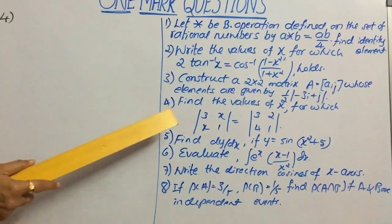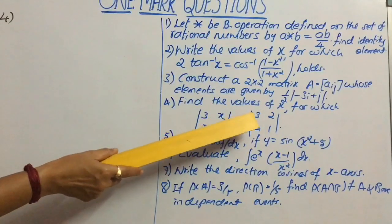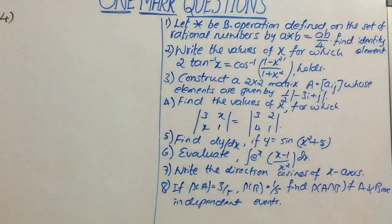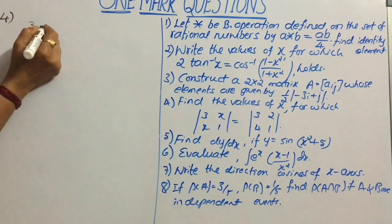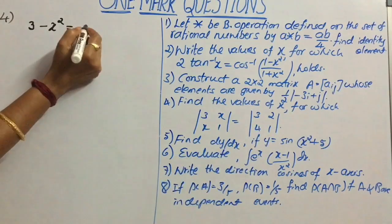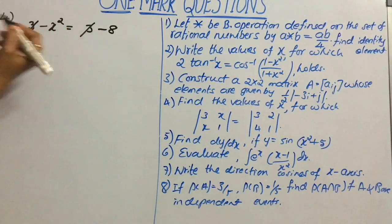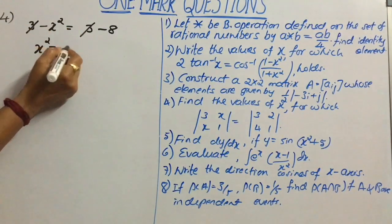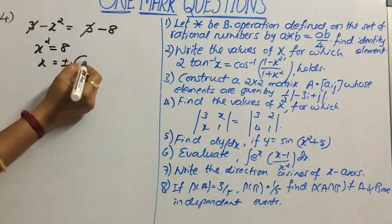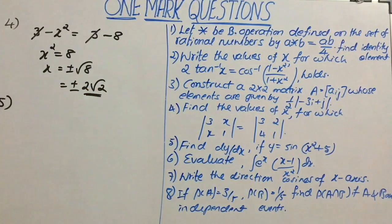Therefore, the required matrix A is equal to [[1, 1/2],[5/2, 2]]. Moving on to question 4: find the values of x for which determinant of [3x, x; 1, 1] equals determinant of [3, 2; 4, 1]. The value of the first determinant is 3 minus x squared, and the second determinant gives 3 minus 8. Cancelling 3 on both sides, we get x squared equal to 8, so x equals plus or minus root 8, that is plus or minus 2 root 2.